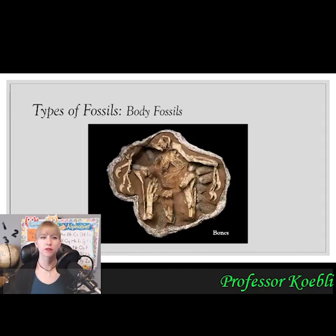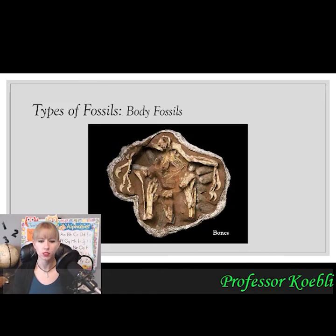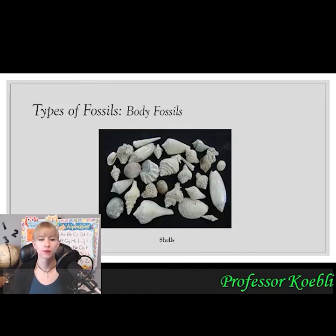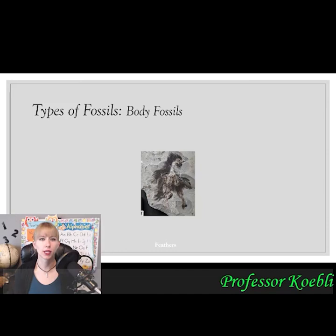Let's go over types of fossils. Body fossils include things like bones, claws, and teeth — the hard physical bits. Shells are also very hard and common. Skin is another body fossil — one particular dinosaur was found completely intact with skin; it had fallen into water and been covered in mud, which preserved it.